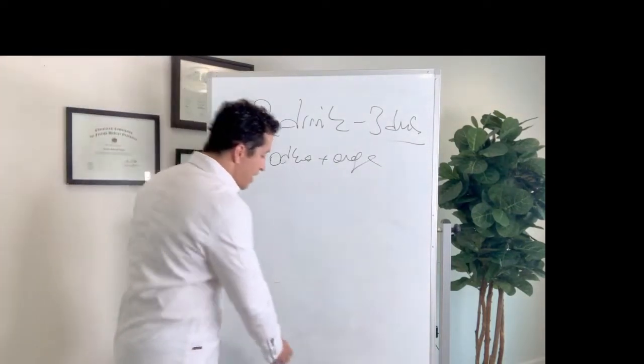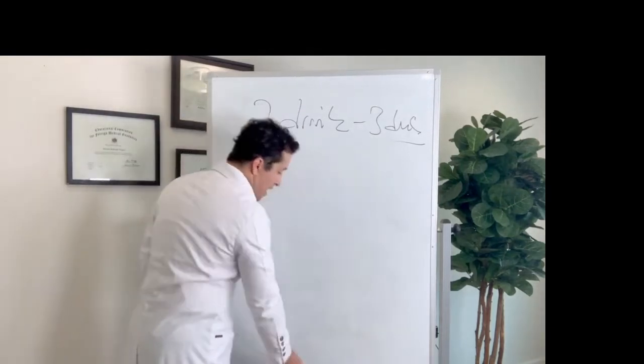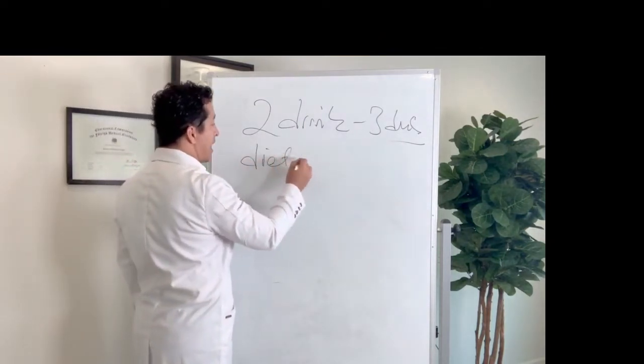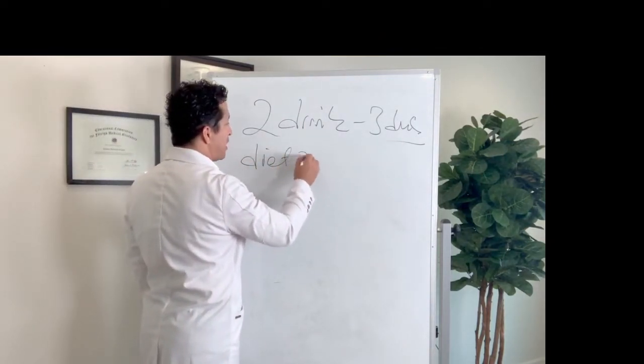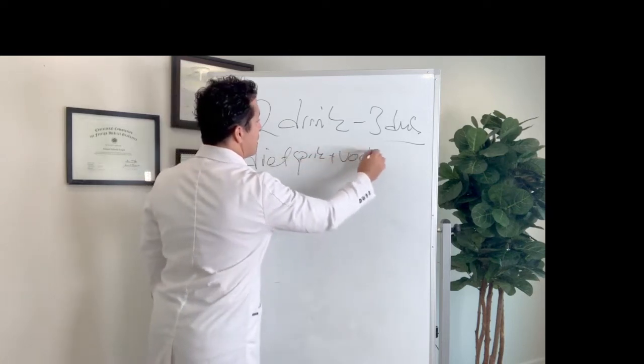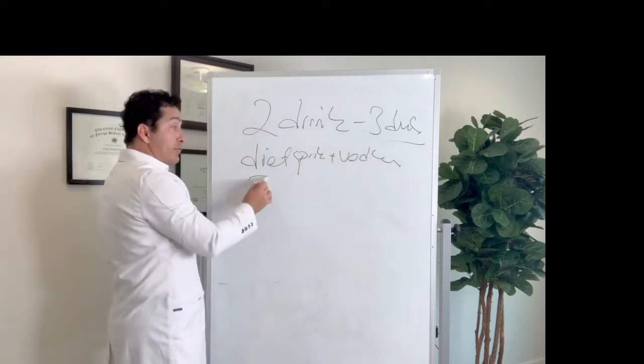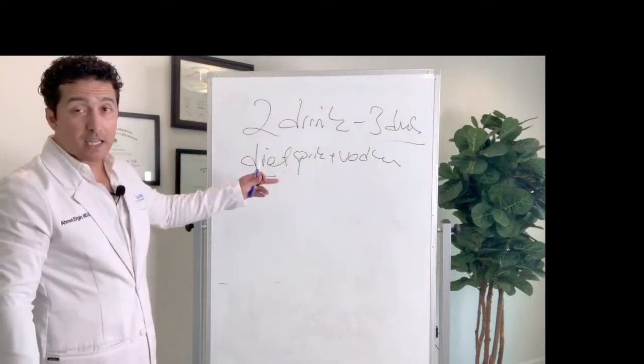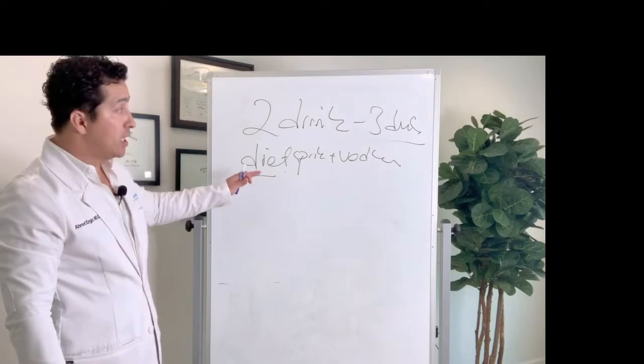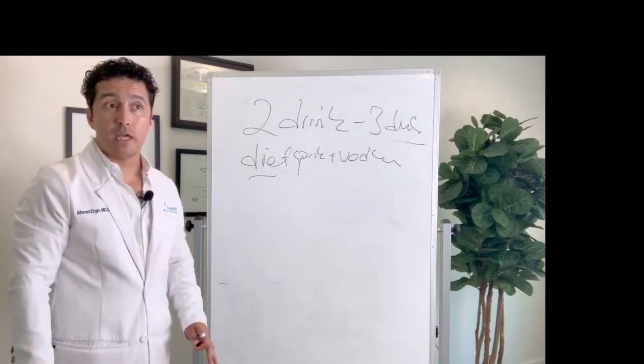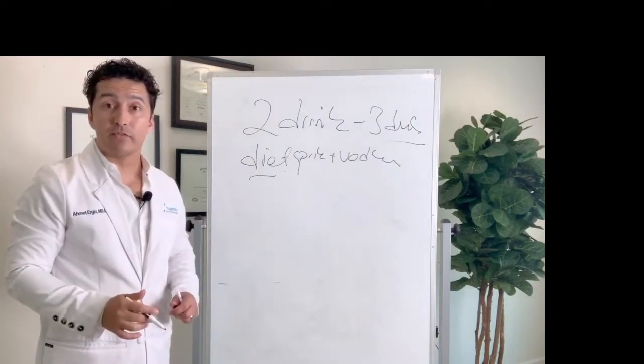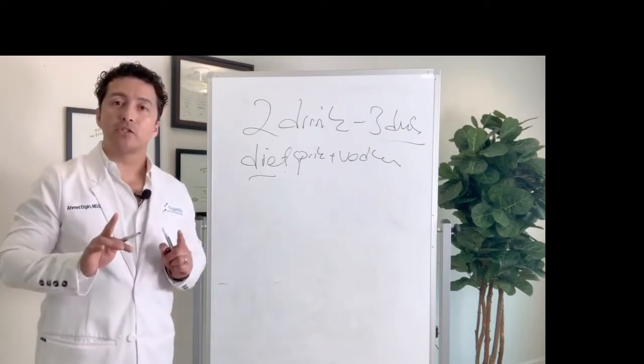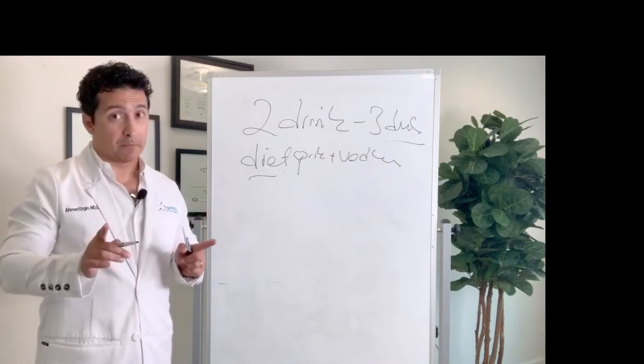On the other hand, if you're having a diet Sprite with some vodka, that will be fine because actually studies show that moderate drinking, like two drinks with your meal, can actually reduce your fasting blood sugars and can actually reduce your insulin levels and insulin resistance. Isn't that surprising? It's all about how much you are drinking and how you're drinking.